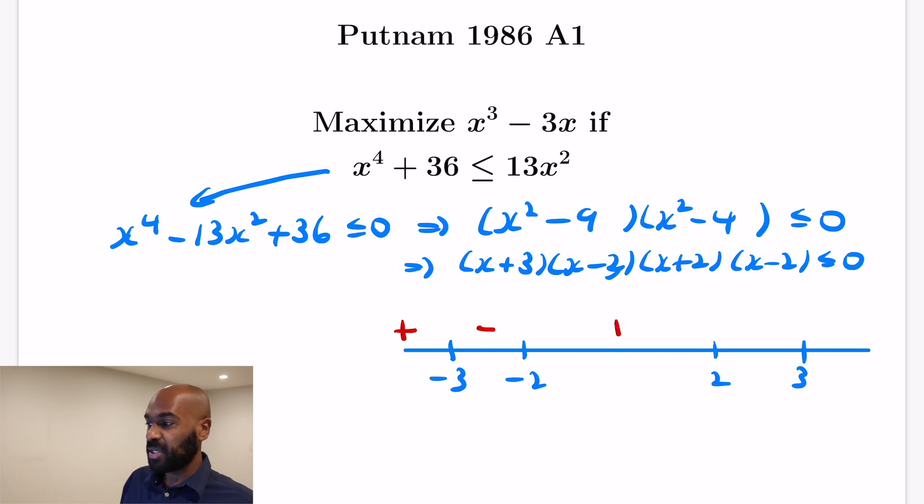Then it switches to negative because one of the factors becomes negative, then two of them become positive, and then two of them become positive so that the product is positive between -2 and 2, then negative, then positive.